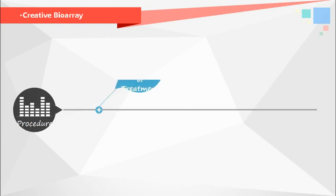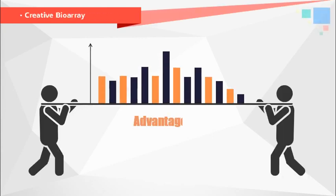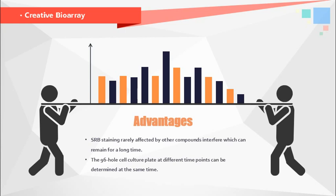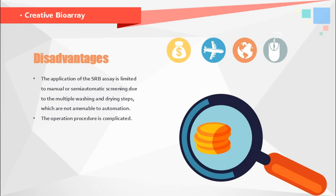The SRB protocol can be divided into four main steps: preparation of treatment, incubation of cells with the treatment of choice, cell fixation, and SRB staining. This assay can be used in an efficient and sensitive manner to test chemotherapeutic drugs or small molecules in adherent cells. It also has applications in evaluating the effects of gene expression modulation, as well as studying the effects of miRNA replacement on cell proliferation. However, application of the SRB assay is limited to manual or semi-automatic screening due to the multiple washing and drying steps, which are not amenable to automation.